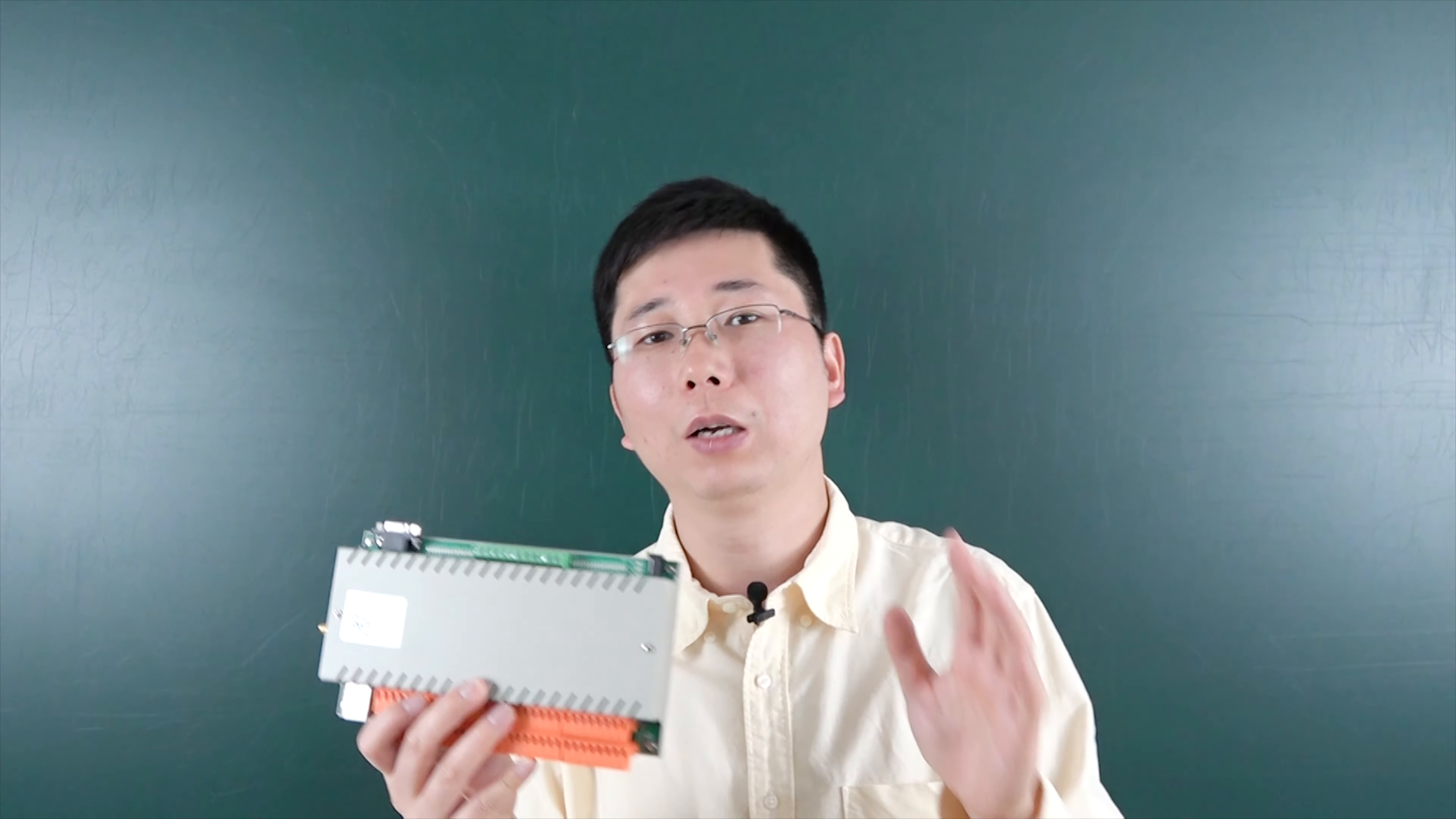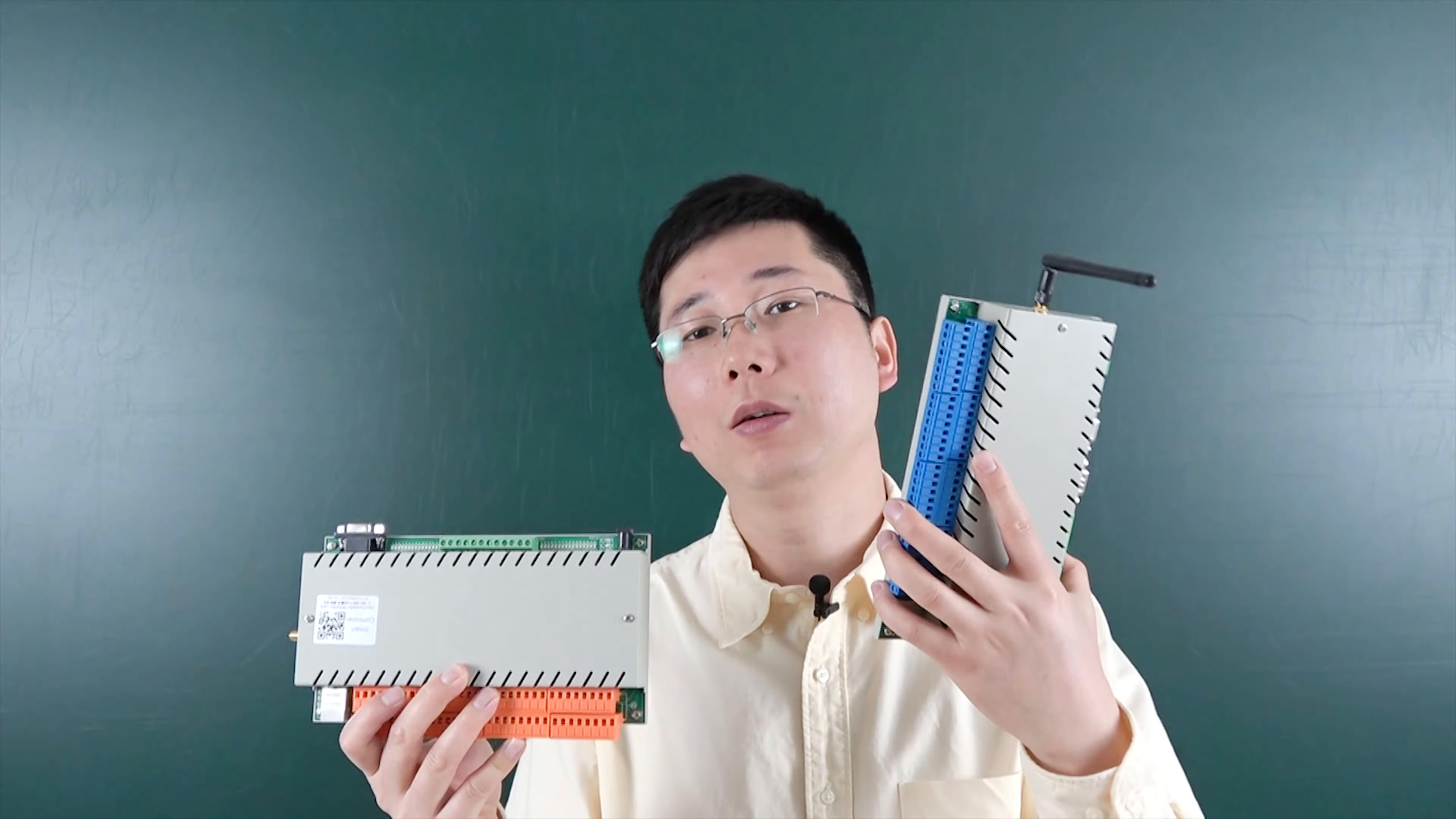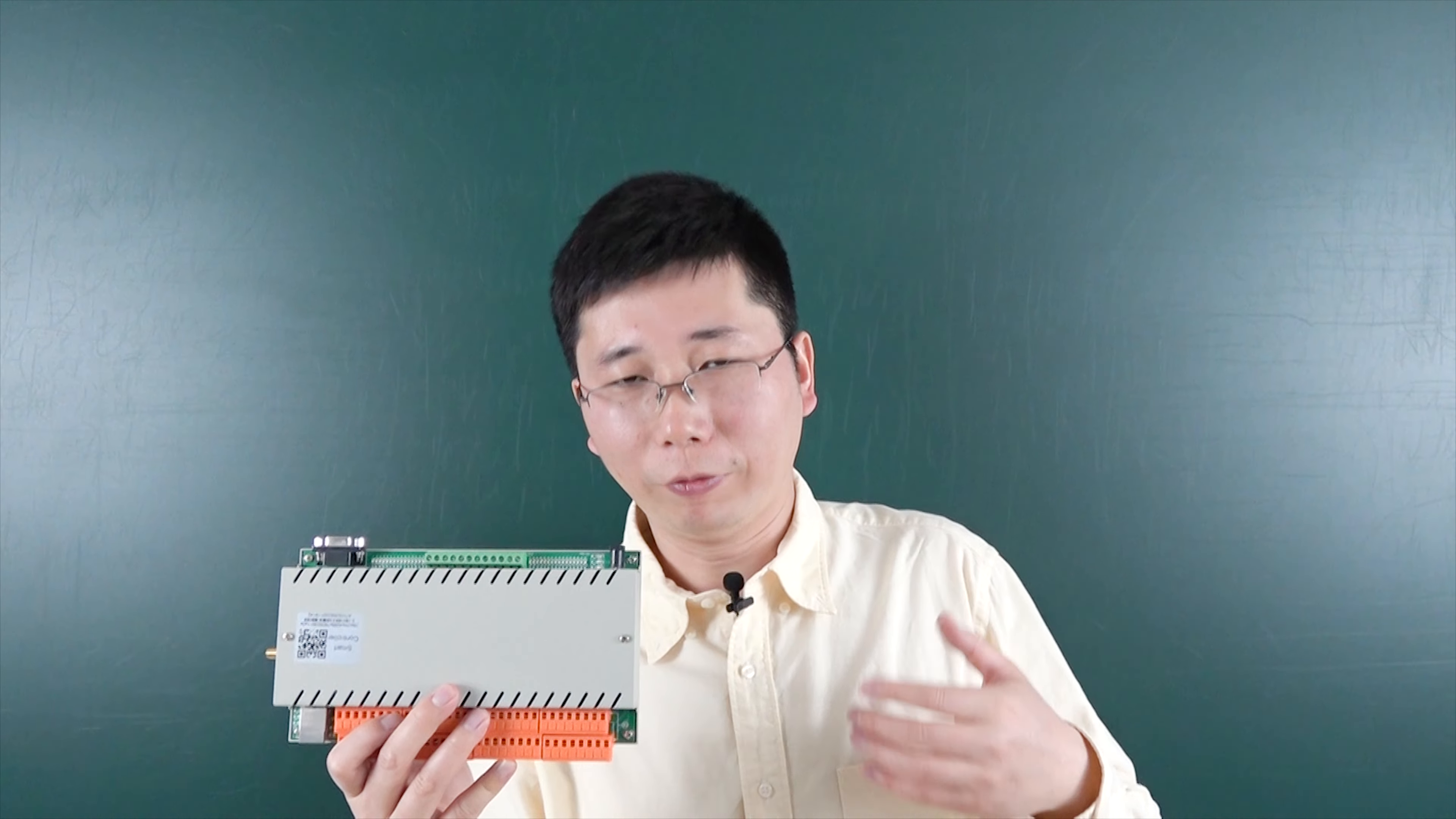Before, if you wanted to turn on relay one, turn off relay two, or turn on relay three, you would use three HTTP commands. But now, you can use only one command. You can create a custom command in the CRL-B PC software to control many relays on, off, and toggling with just one custom command, improving your efficiency.